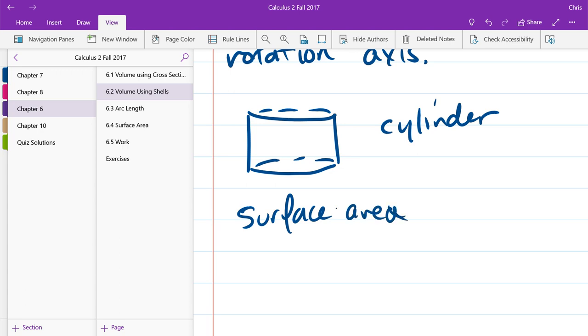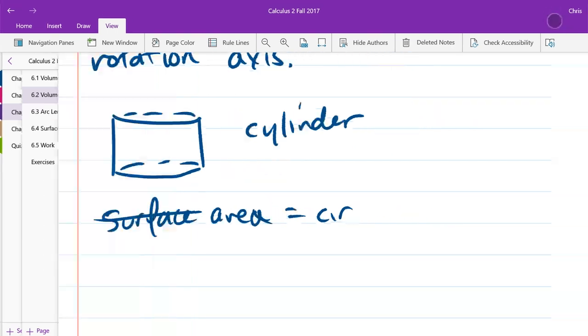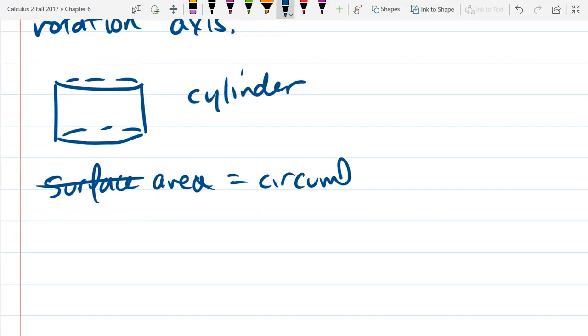So I'm going to cross out the word surface area, because usually if I drew the shape instead of surface area, I'd be counting the top and bottom as well, but I'm just talking about the area of the vertical side. Area equals circumference times height.